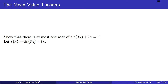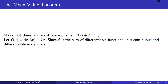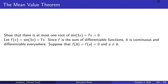Here's the problem: show that there is at most one root of sine of 3x plus 7x equals zero. The first step is we're going to define a function f to be sine of 3x plus 7x. Since f is the sum of differentiable functions, it is continuous and differentiable everywhere. We're going to suppose that there are two roots of our function f — that is, f of a and f of b are both zero, and we're going to assume that a and b are not the same point. This should give us a contradiction because we're trying to prove there is at most one root.